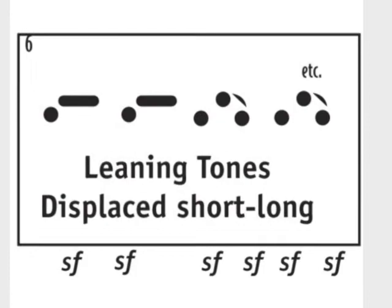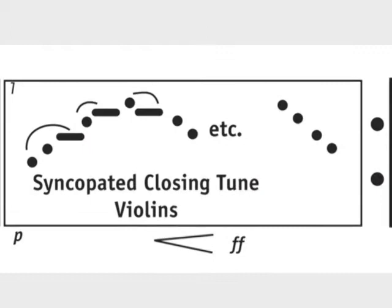Frame six, leaning tones, which is displacement of the short-long rhythm. And that results in frame seven, the syncopated closing tune in the violins.